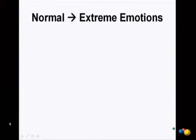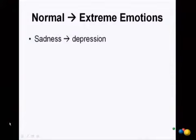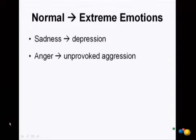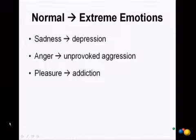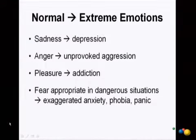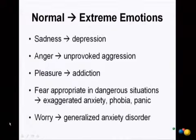Emotions really exist on a range — from a normal sense of emotions to their extreme forms. Sadness, which is a very normal human experience, in its extreme can lead to major depression. Anger, also a very normal human emotion, in its extreme can become unprovoked aggression. Pleasure, in its extreme, can lead to addiction. Fear, which is appropriate in dangerous situations as a protective mechanism, in its exaggerated form can lead to anxiety, different kinds of phobias, even panic attacks or panic disorder. And worry, when out of control and extreme, can lead to generalized anxiety disorder. We can really appreciate that emotions shift along a continuum from normal to extreme.